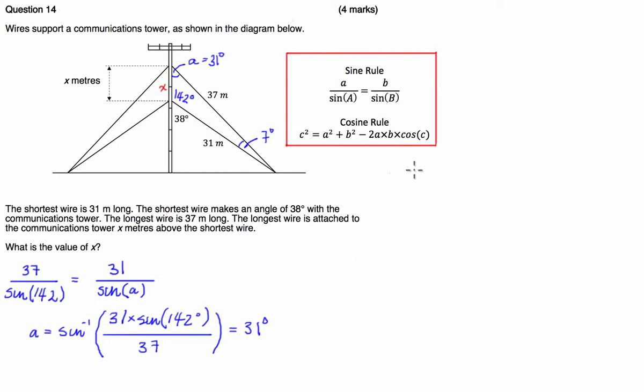So basically the cosine rule says that the square of one side is equal to the square of the two other sides minus two times the other two sides times the cosine of the angle opposite the side we're trying to find. So we're going to say that x squared is equal to 37 squared plus 31 squared minus two times 37 times 31 times the cosine of seven degrees.